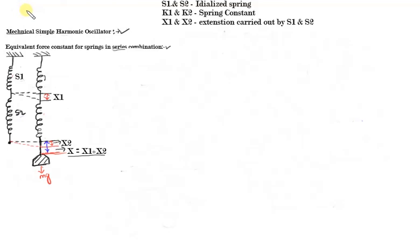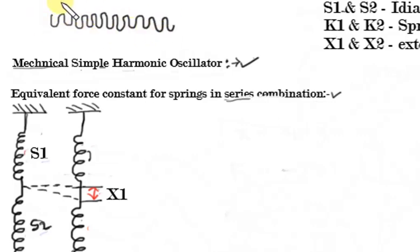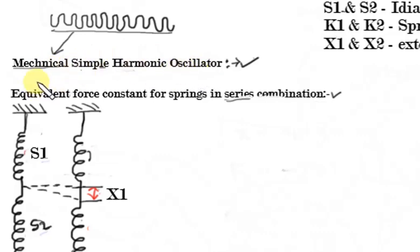So what is a mechanical simple harmonic oscillator? For example, if we are considering any wave making an oscillation, and if the same kind of features are executed by any mechanical body, that thing which we call a mechanical simple harmonic oscillator.